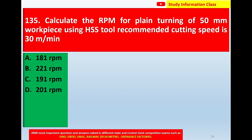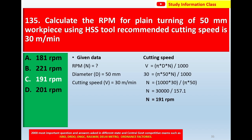The options are: 181 rpm, 221 rpm, 191 rpm, or 201 rpm. The correct answer is option C: 191 rpm.